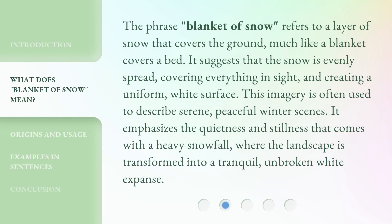The phrase 'blanket of snow' refers to a layer of snow that covers the ground, much like a blanket covers a bed. It suggests that the snow is evenly spread, covering everything in sight and creating a uniform white surface. This imagery is often used to describe serene, peaceful winter scenes. It emphasizes the quietness and stillness that comes with a heavy snowfall, where the landscape is transformed into a tranquil, unbroken white expanse.